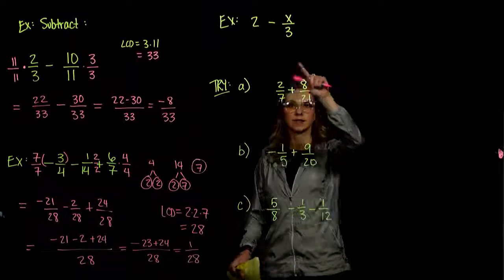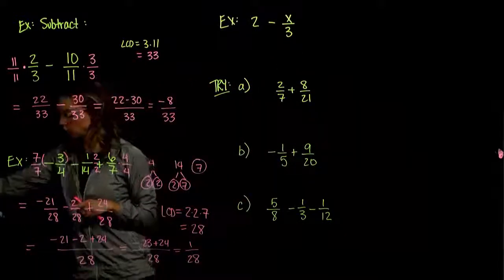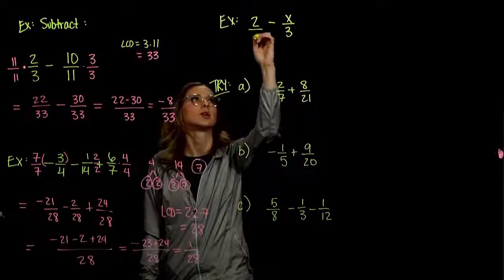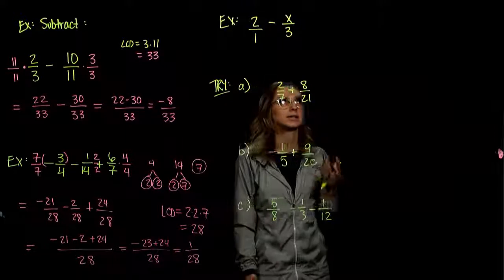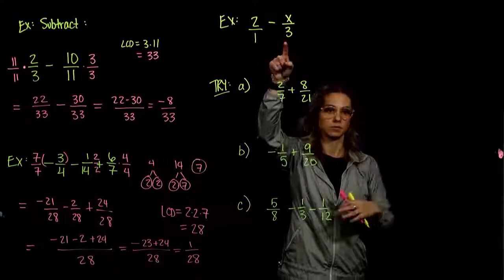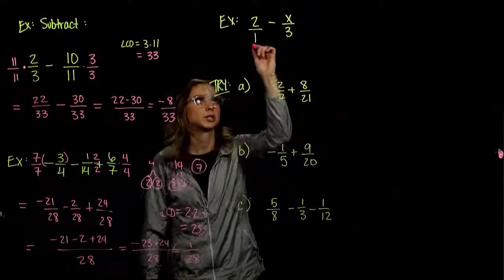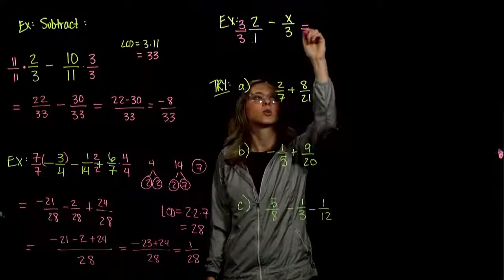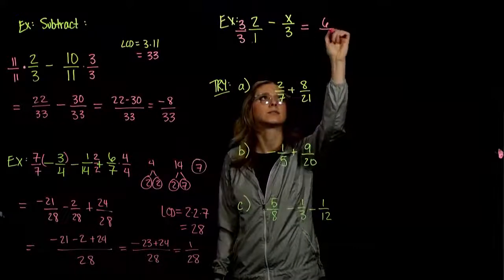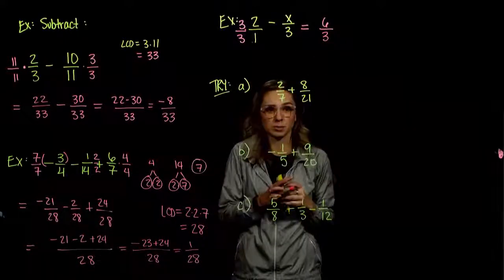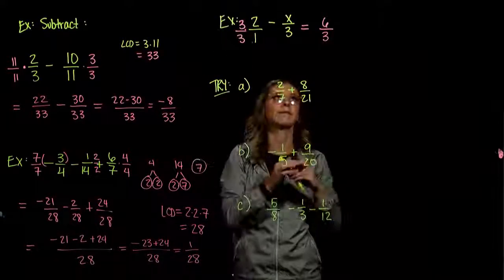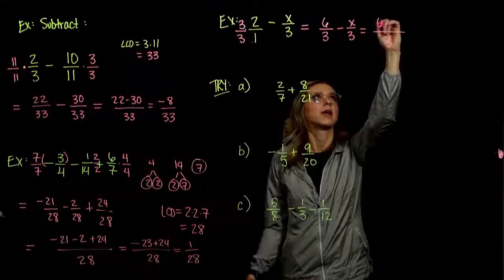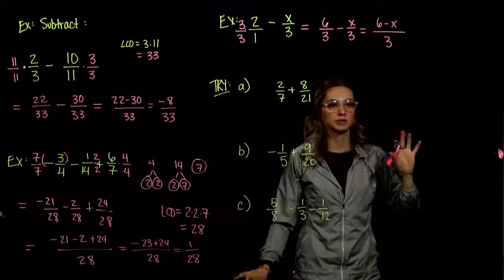In the last example before practice: we have 2 minus 1 third, and 2 is not a traditional fraction. We could put 2 over 1. The least common denominator between 1 and 3 is 3, so we only have to alter the first one. To turn 1 into 3, multiply by 3 top and bottom: 3 times 2 is 6 over 3 times 1 is 3. We can double-check: is 6 divided by 3 really 2? Yes. The second fraction already has the common denominator. Since we have the common denominator, we keep it and add or subtract across the top. Those two are not like terms, so we can't go any farther.